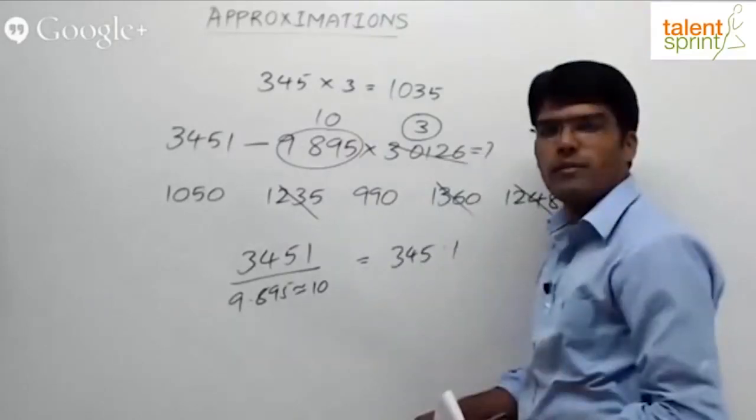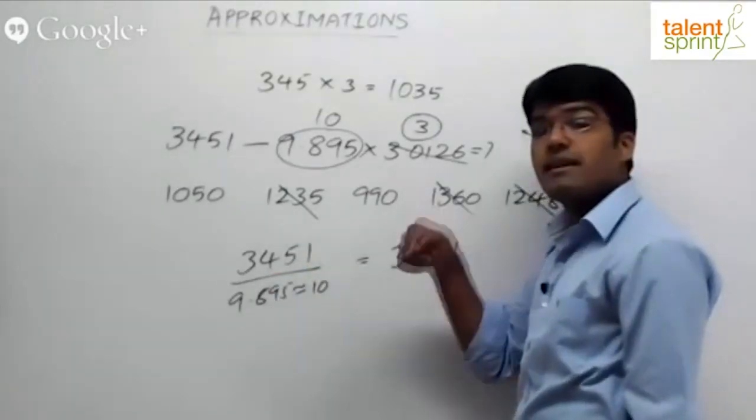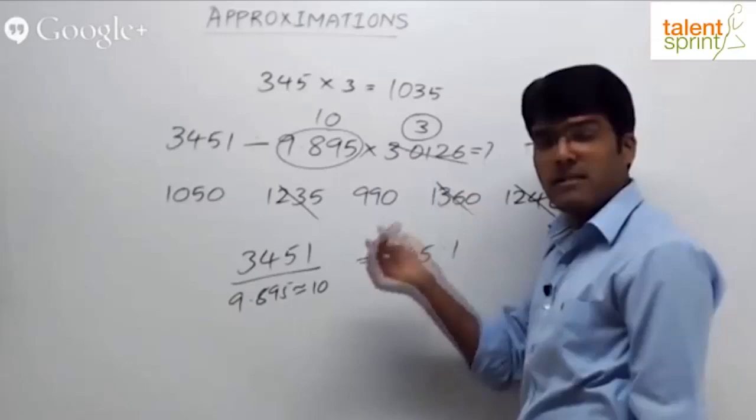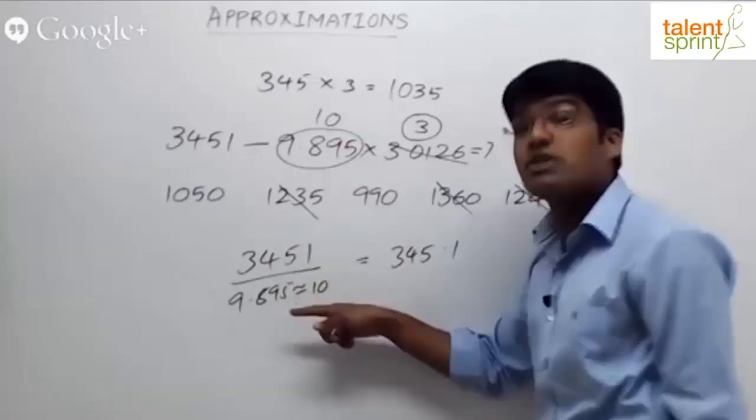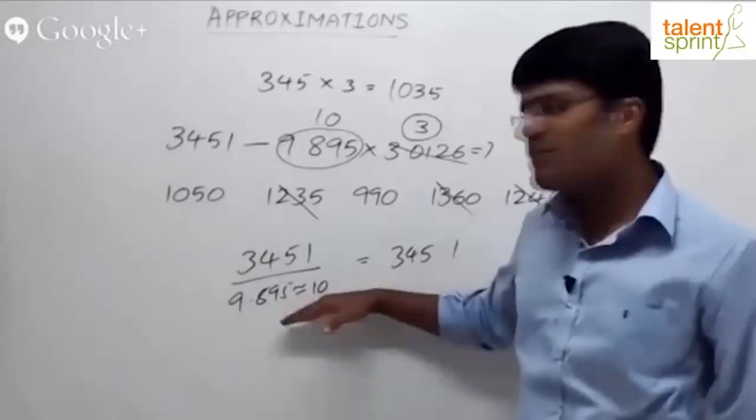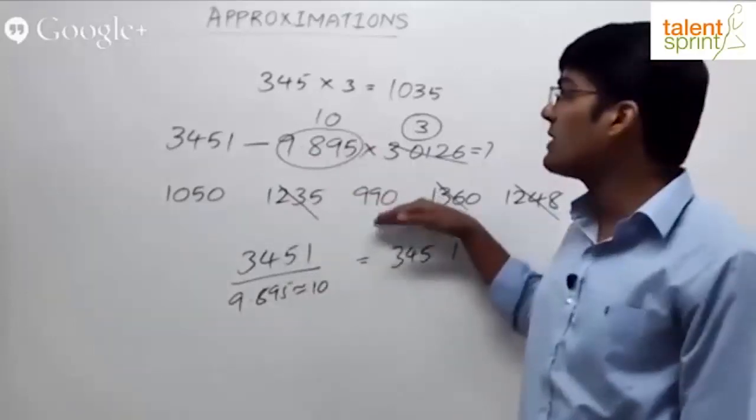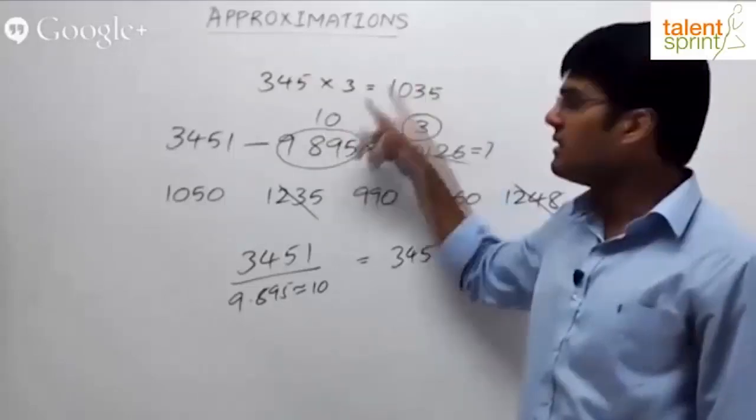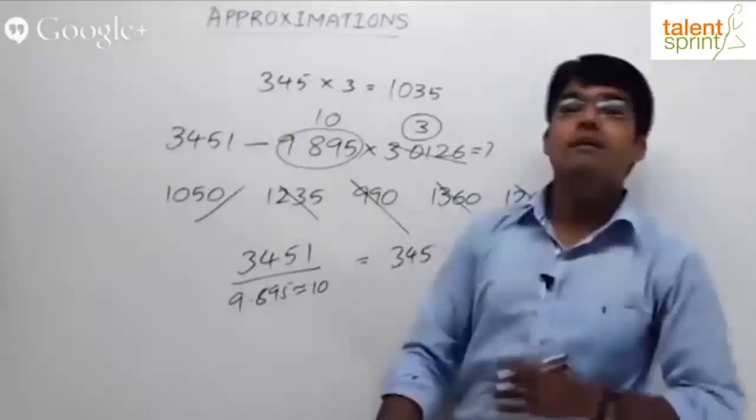But the actual denominator is less. Approximately denominator is 10, actual denominator is less. What happens when the denominator is less? When the denominator is less, value will be more. This is very classical mathematics. When the denominator is less, value will be more. That means actual value will be more. When actual denominator is less, actual value will be more. That means actual answer should be more than 345. When something more than 345 is multiplied with 3, obviously answer will also be more than 1035. So 990 gets ruled out. Now I can say 1050.